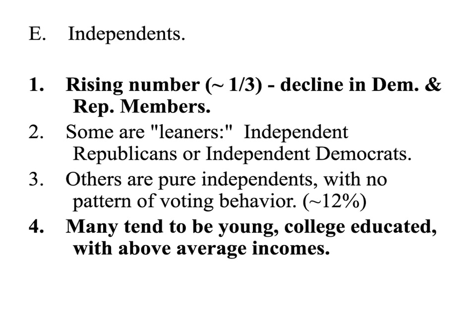Independents are people not registered as Democrat or Republican — they register independent because they don't want to be affiliated with a party. We have seen an increase in independents and a decrease in registered Democrats and Republicans. About one in three people in this country is an independent, and these are the voters candidates need to earn if running for president. Some independents lean one way, some are pure independents with no clear pattern — about 12% of people. Many independents tend to be young, college-educated, with above-average incomes.